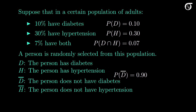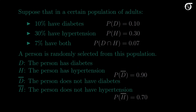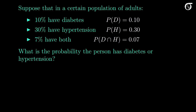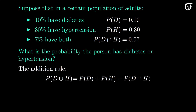The complement of event H is the event the person does not have hypertension, with probability 1 − 0.3 = 0.7. Now suppose we want the probability the person has diabetes or hypertension or both — the probability of the union of D and H. By the addition rule, P(D union H) = P(D) + P(H) − P(D intersect H) = 0.1 + 0.3 − 0.07 = 0.33.